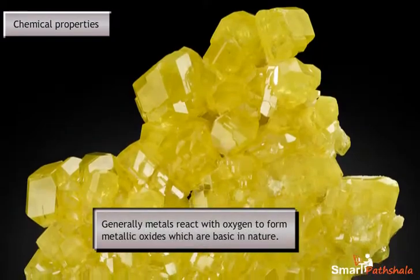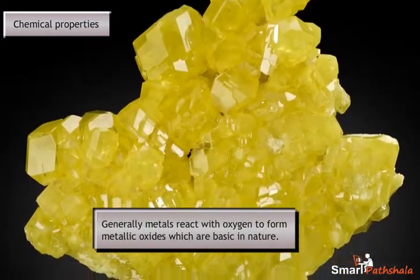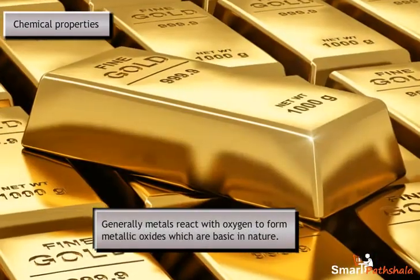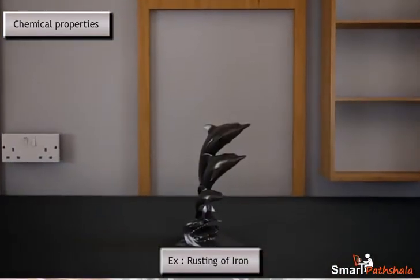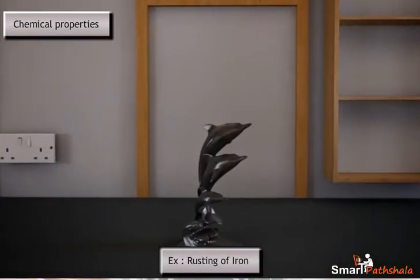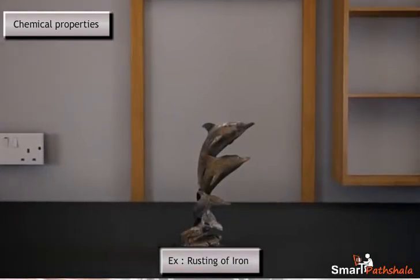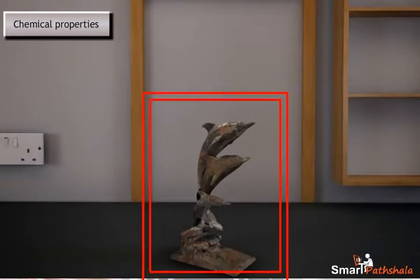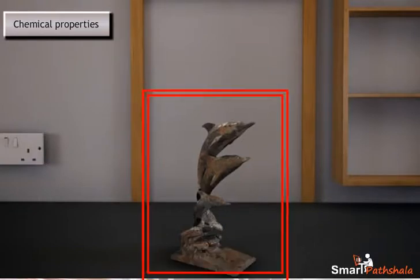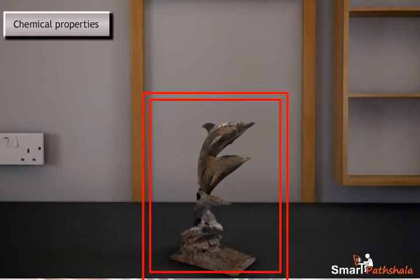Generally, metals react with oxygen to form metallic oxides which are basic in nature. For example, if an iron bar is exposed to the atmosphere for a longer period, we can observe the formation of rust on its surface. This phenomenon of iron reacting with atmospheric oxygen to form iron oxide is called rusting of iron.